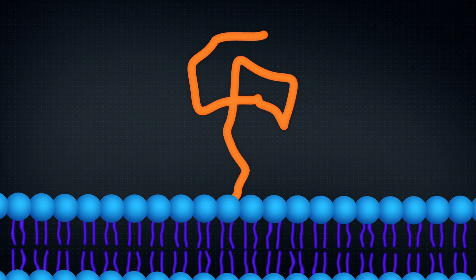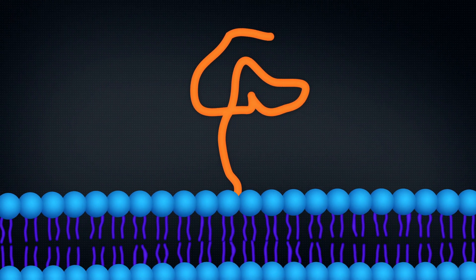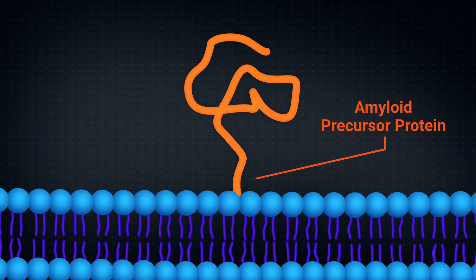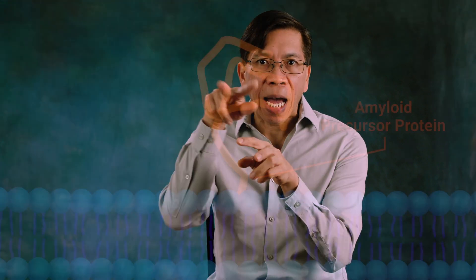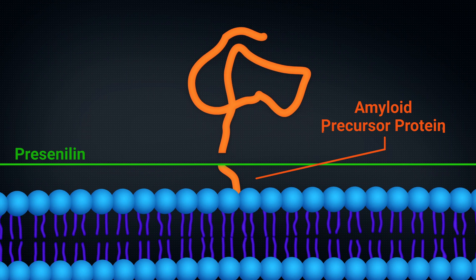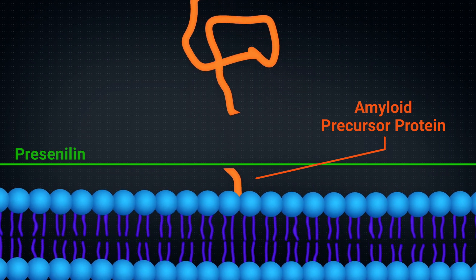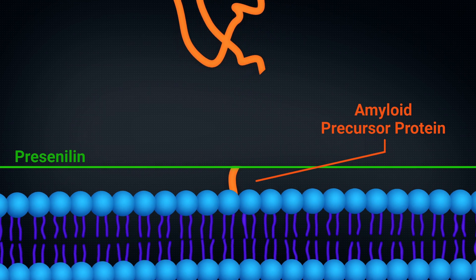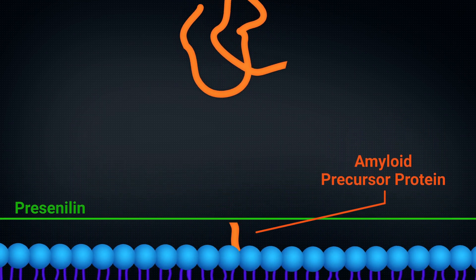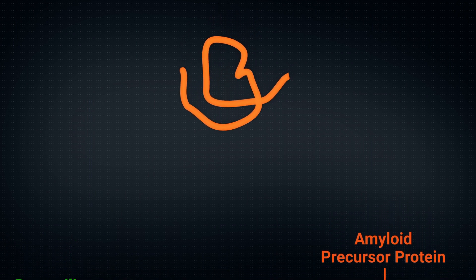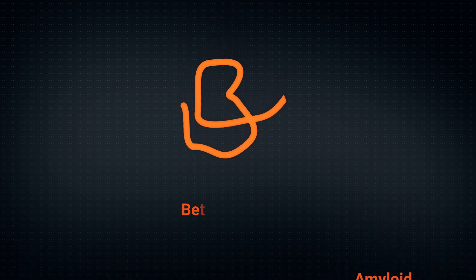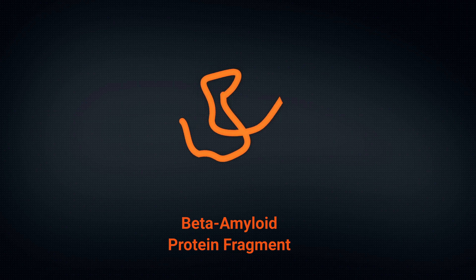There's presenilin number one and presenilin number two. Presenilins are membrane proteins — proteins found on the surface of the cell. What presenilin does is it participates in the cutting of the amyloid protein, which is a large protein sticking out of the membrane of the cell. When presenilin is not working normally, it cuts the amyloid protein such that it creates that beta-amyloid fragment, which is found to accumulate in the brains of Alzheimer's patients.